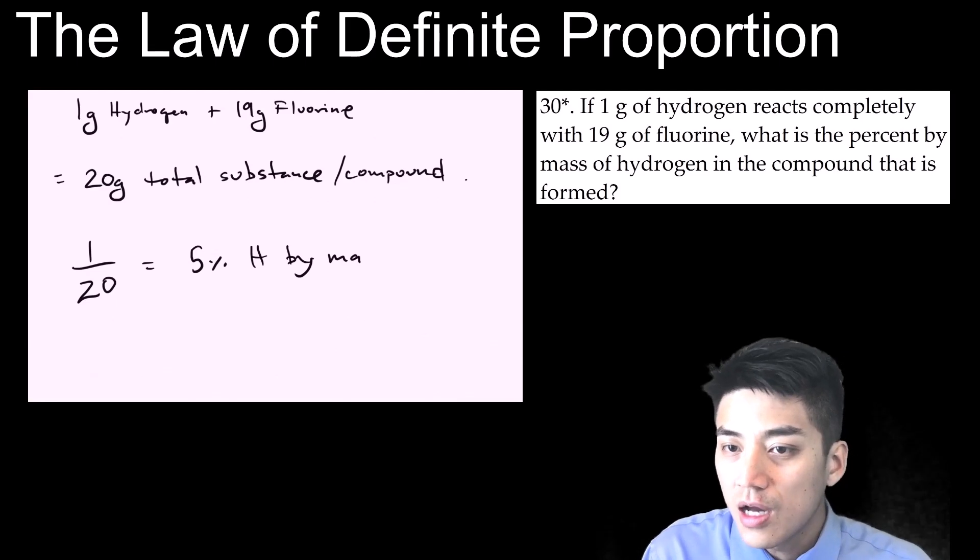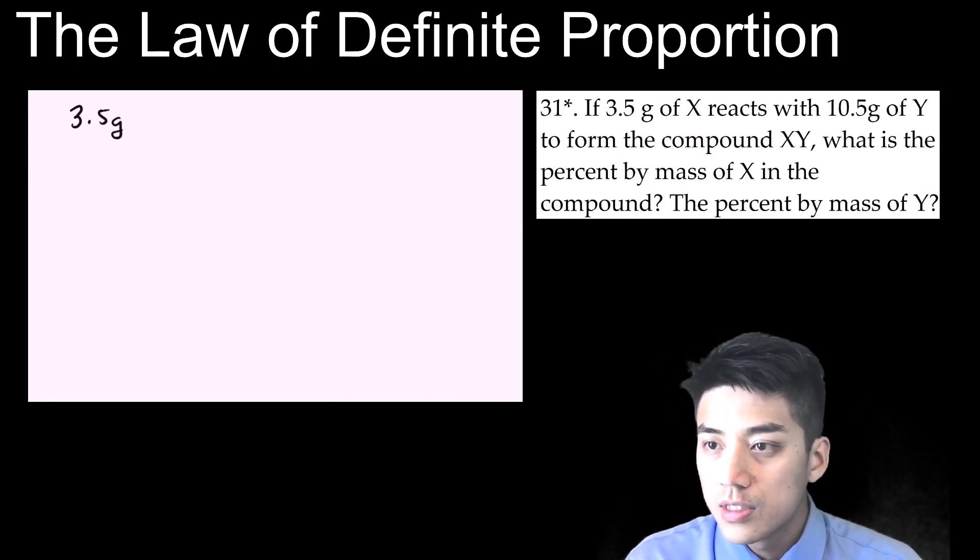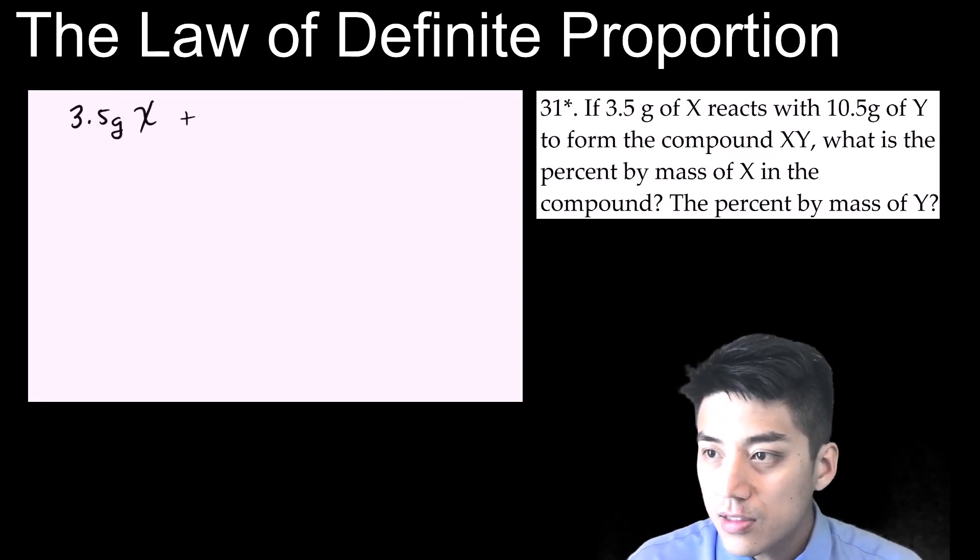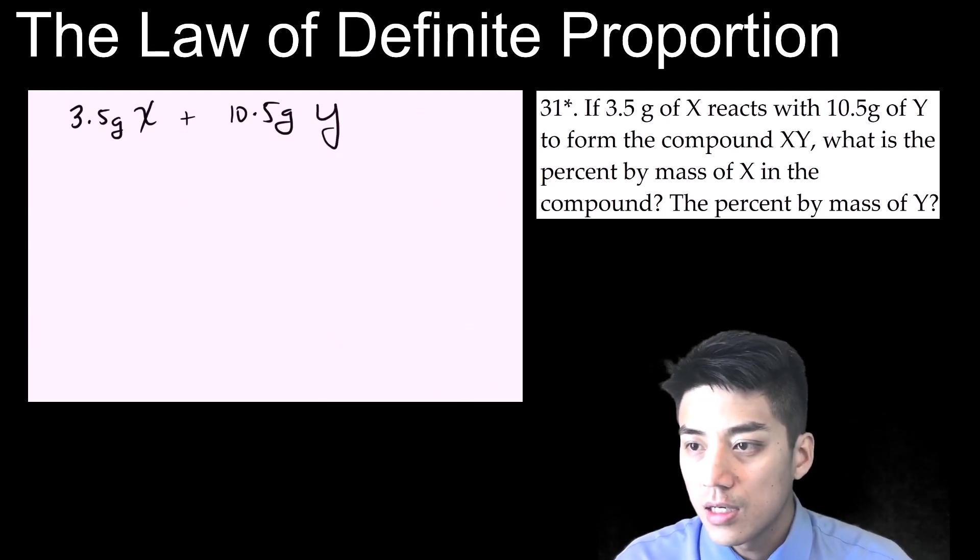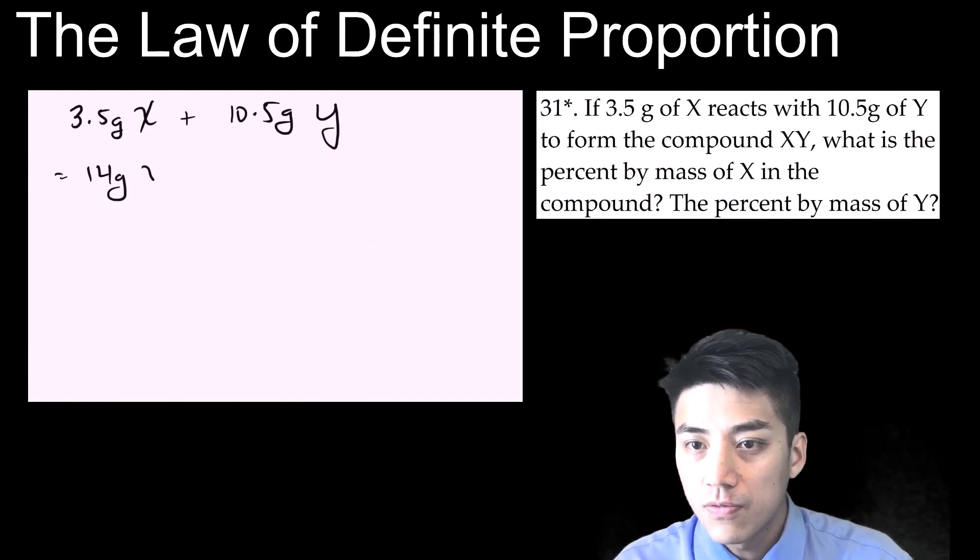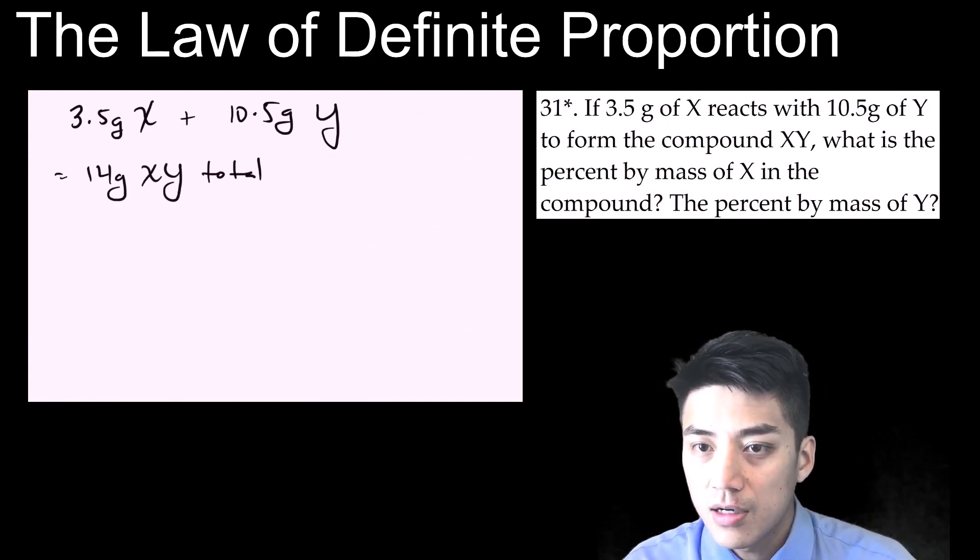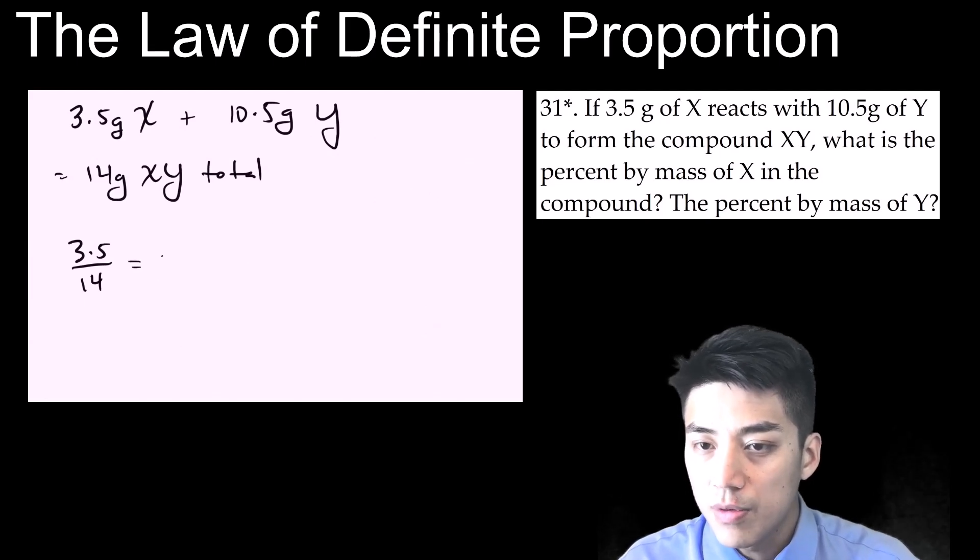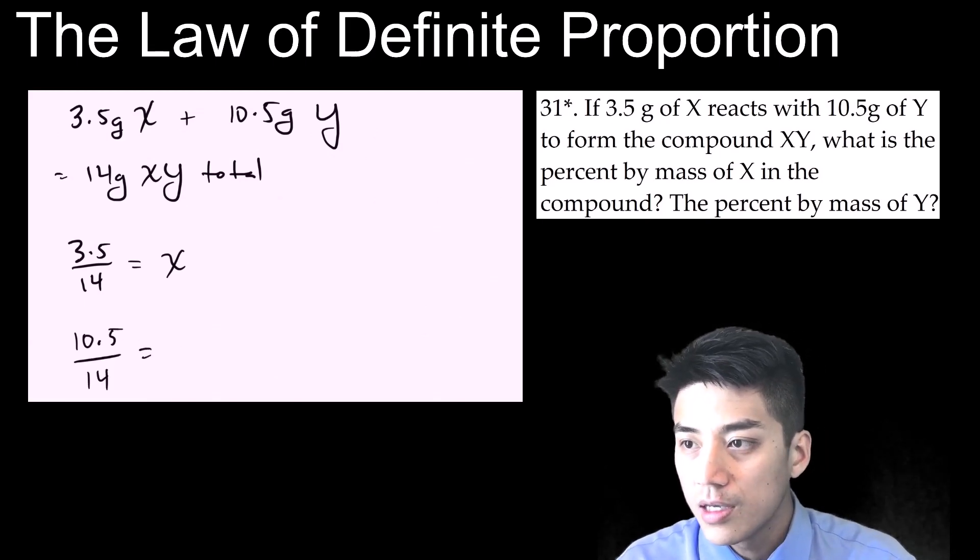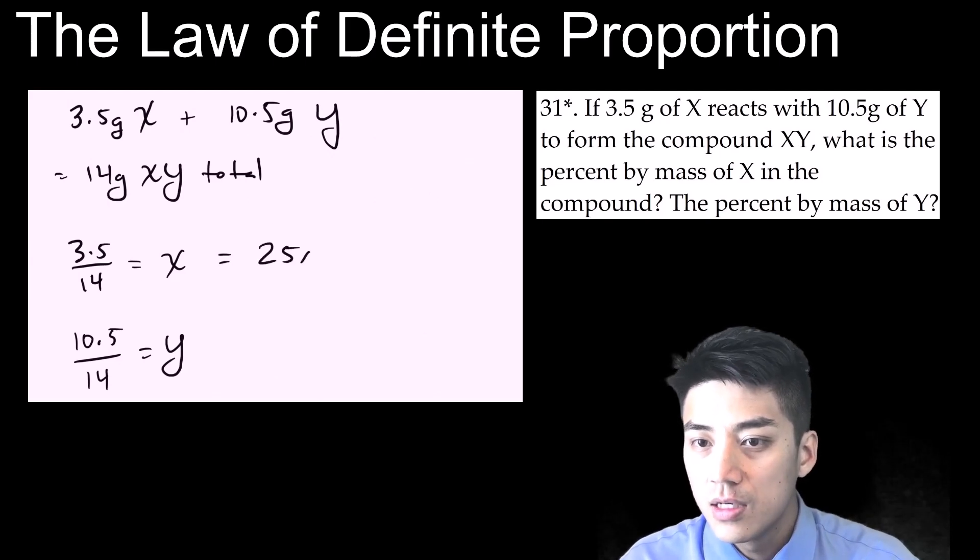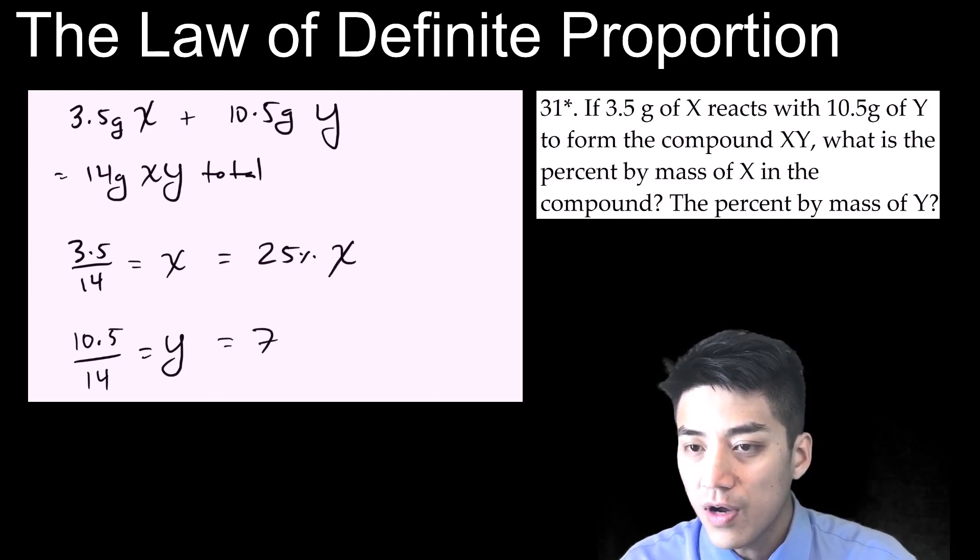For problem number 31, it reads, if 3.5 grams of X reacts with 10.5 grams of Y to form the compound XY, what is the percent by mass of X? And what is the percent of mass of Y? So first, I find the total, so I add the two together. I get 14 grams of XY in the total. If I want to find the percent by mass of compound X, I would have to go 3.5 over 14. And if I want to find the percent by mass of compound Y, I take 10.5 and I divide by 14. And then I use my calculator. I would get 25% is X, and the other 75% is Y.